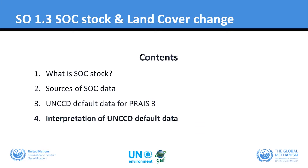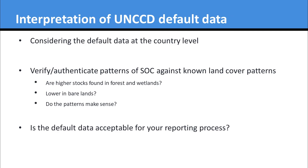How can you interpret UNCCD default data for your country, and how can you nationalize your global data? When considering the default data at a country level, it is important that the parties responsible for constructing their reporting look at these maps, verify and authenticate the patterns of the soil organic carbon against their own known land cover patterns. For example, are the carbon stocks higher in forests and wetlands and lower in bare lands? Do the patterns make sense against what you know about your own country? The goal is to ultimately decide if the default data is acceptable for the reporting process.